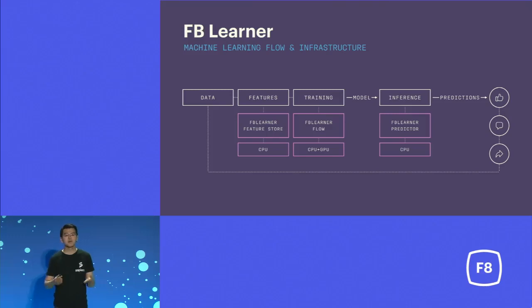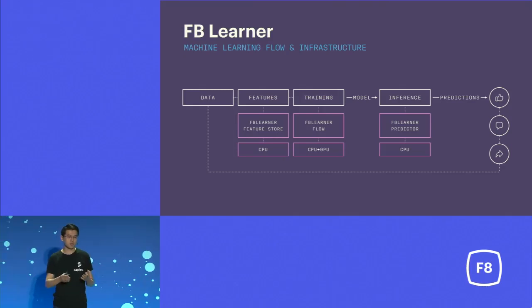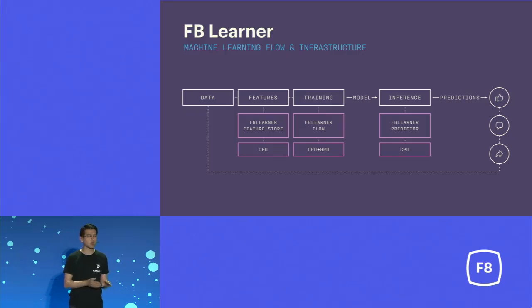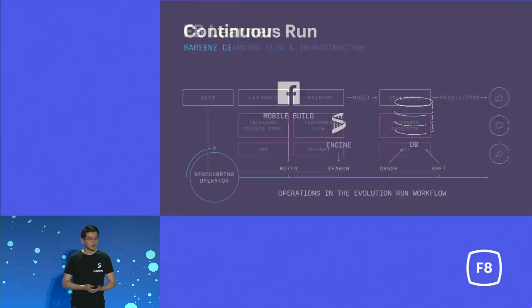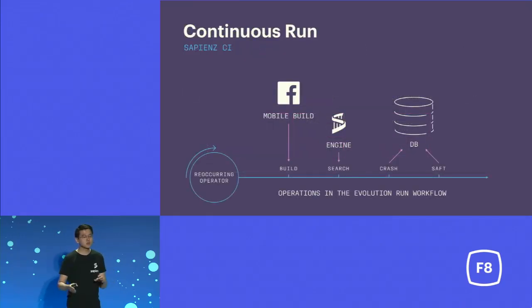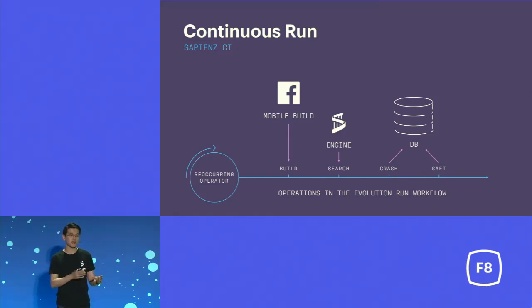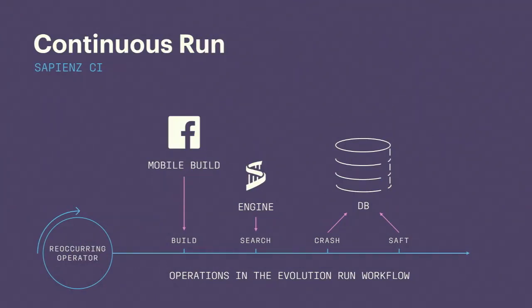On the back end, Sapiens' continuous run is enabled by a combination of workflows built on top of the FBLearnerFlow platform. FBLearnerFlow is the backbone of Facebook's artificial intelligence — it's used across the company for machine learning experiments and other continuous jobs like Sapiens. Inside Sapiens' evolution workflow, a pipeline of operators works together: the build operator automatically fetches the most recent smoke builds or post-land builds and passes them to the search operator which designs the tests. Then the SEPT operator automatically localizes the fault and triages it to the right owner.